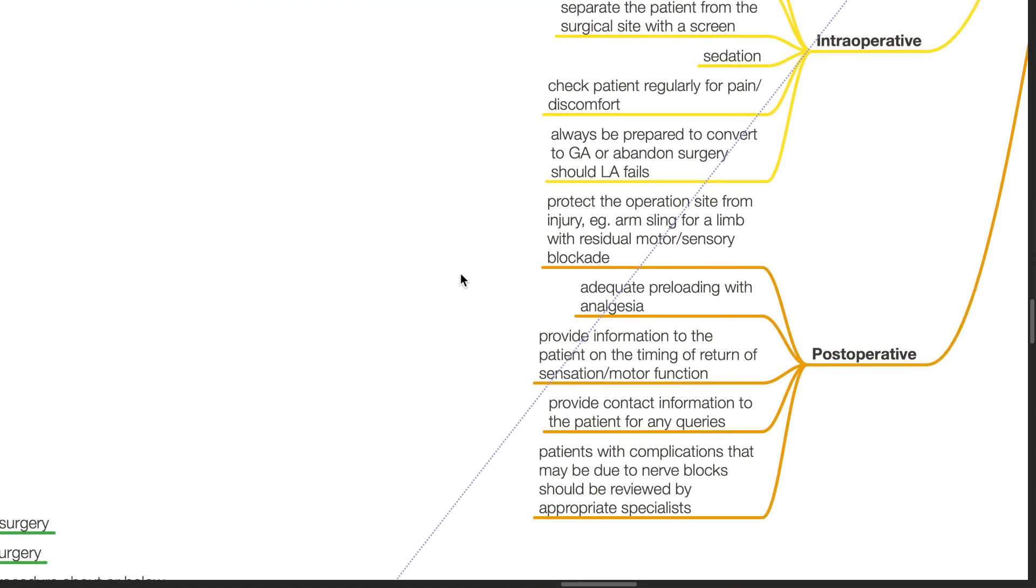Post-operative care includes protection of the operative site from injury, such as using an arm sling for a limb with residual motor or sensory blockade. Adequate preloading with analgesia. Provide information to the patient on the timing of return of sensation and motor function. Provide contact information to the patient for any queries. Patients with complications that may be due to nerve blocks should be reviewed by appropriate specialists.